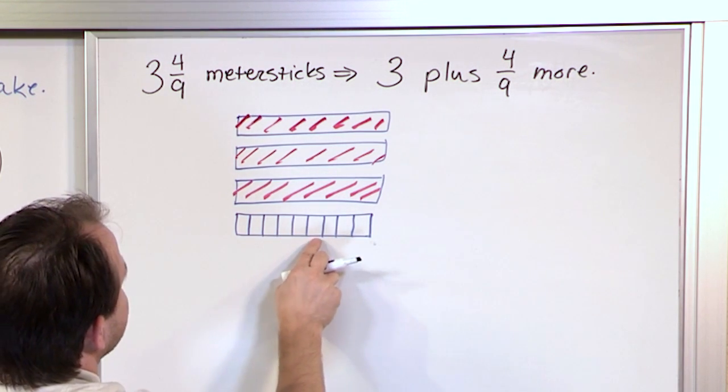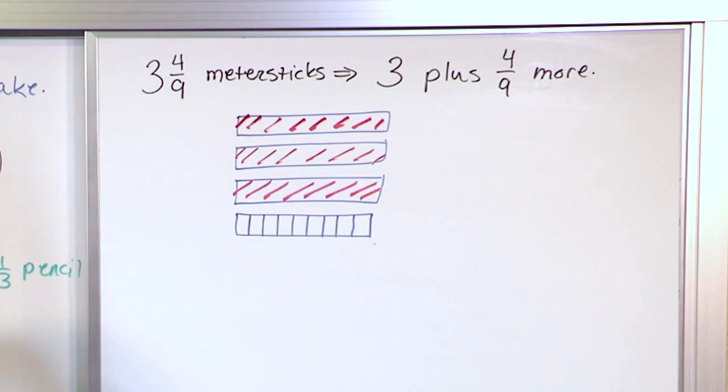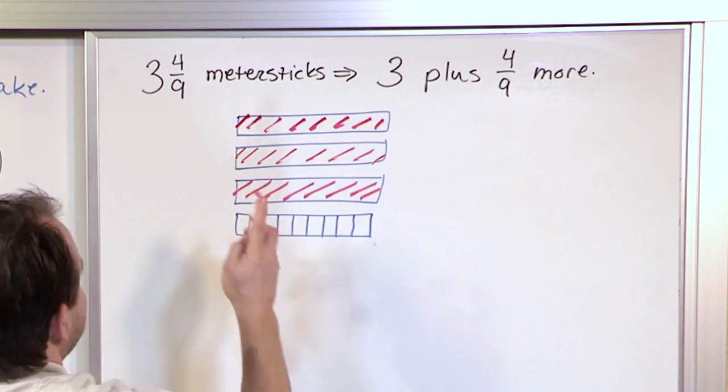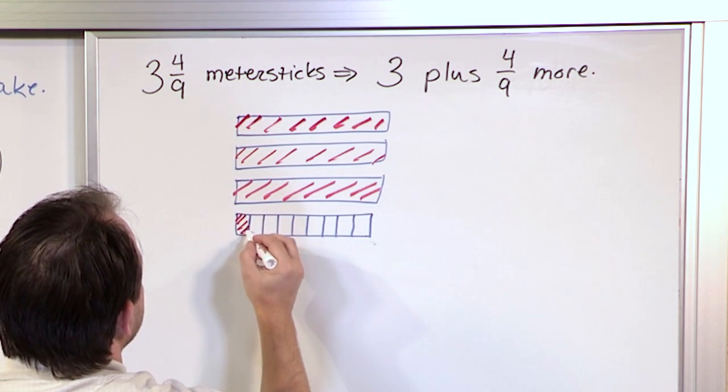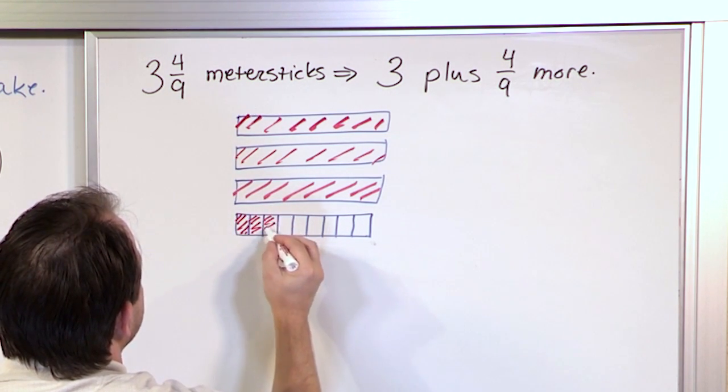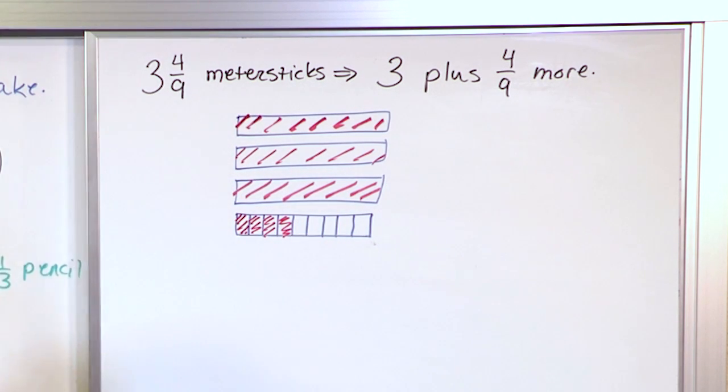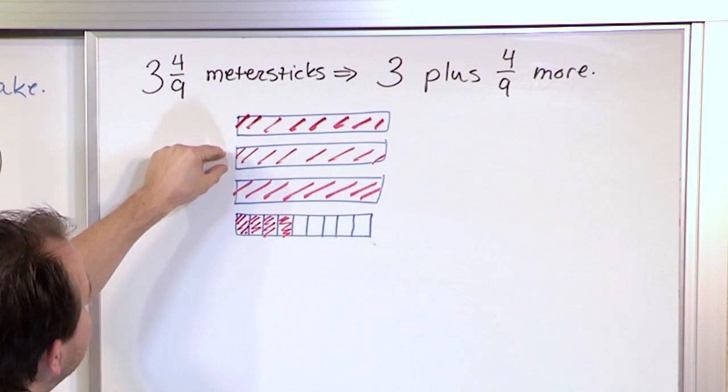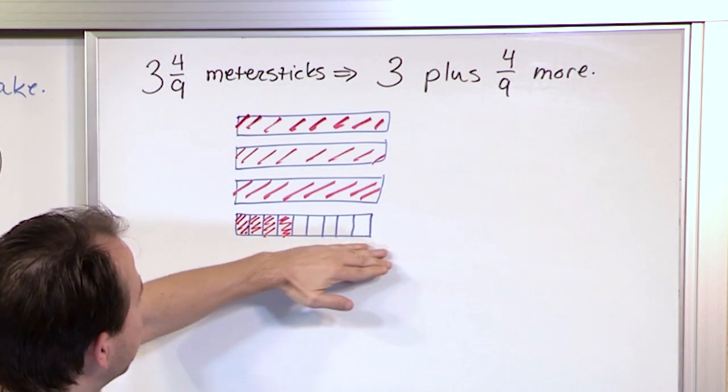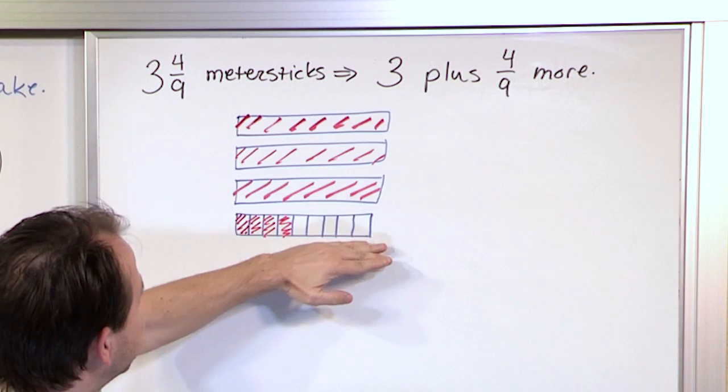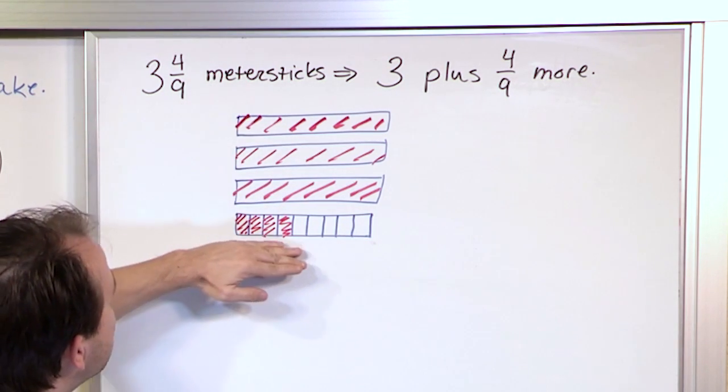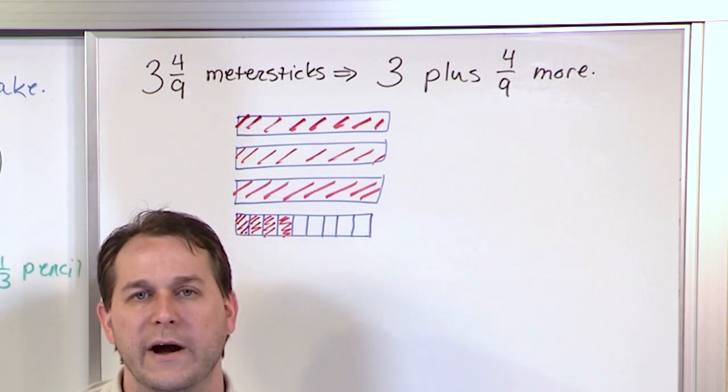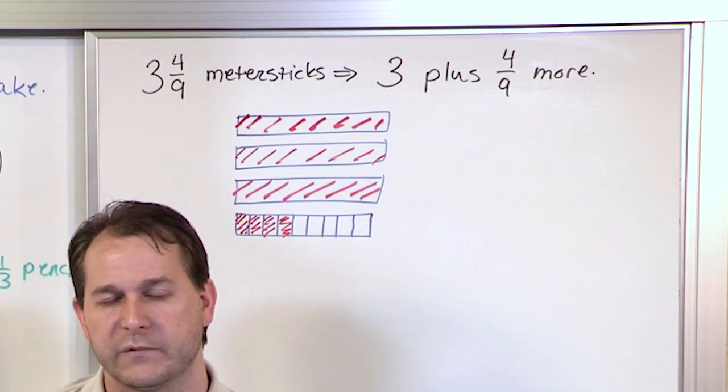And I'll just make this so I have nine equal pieces. One, two, three, four, five, six, seven, eight, nine pieces. And how many pieces do I actually have? I only have four of those. So here's piece number one, piece number two, piece number three, and piece number four. So if I have three and four ninths meter sticks, I have one, two, three, and I have part of another one. I have four pieces out of nine. So it's representing three plus a fraction or a part of another one.